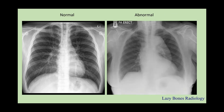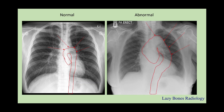Let's try this one. There's an enlargement of the aorta. This is known as a thoracic aneurysm. These are just examples to show how knowing normal anatomy can be beneficial and allow you to identify abnormalities, which will allow you to become a better tech.